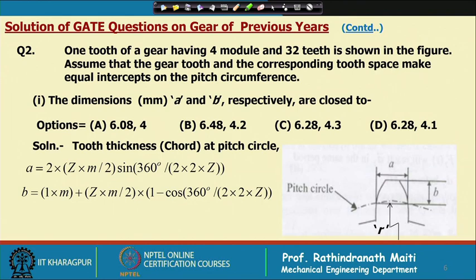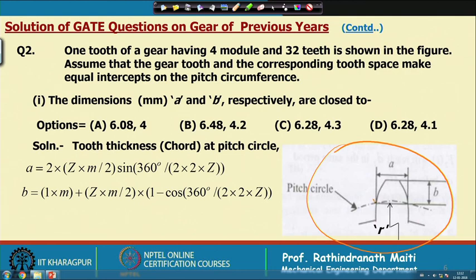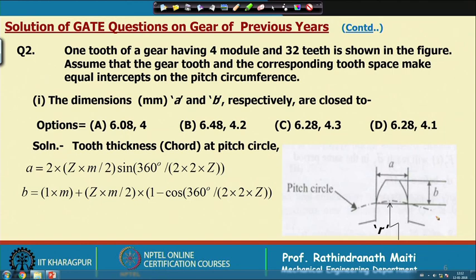The next problem is different. A tooth of a gear having 4 module and 32 teeth is shown in a figure. This is the chordal dimension — remember, this is not the arc. We have to calculate the chordal width and chordal height dimensions.